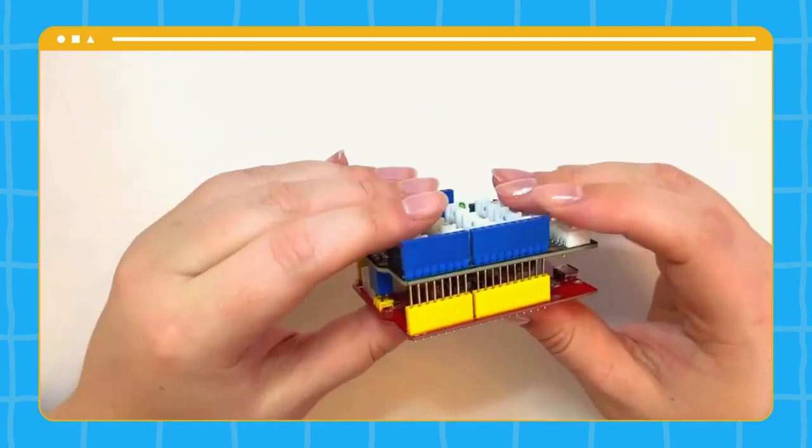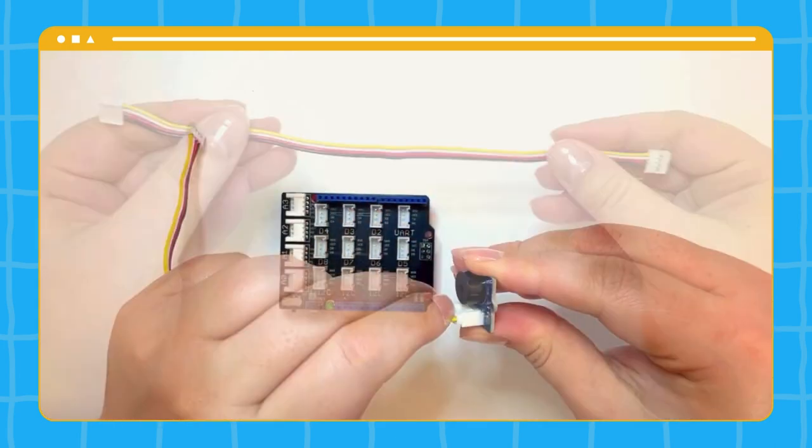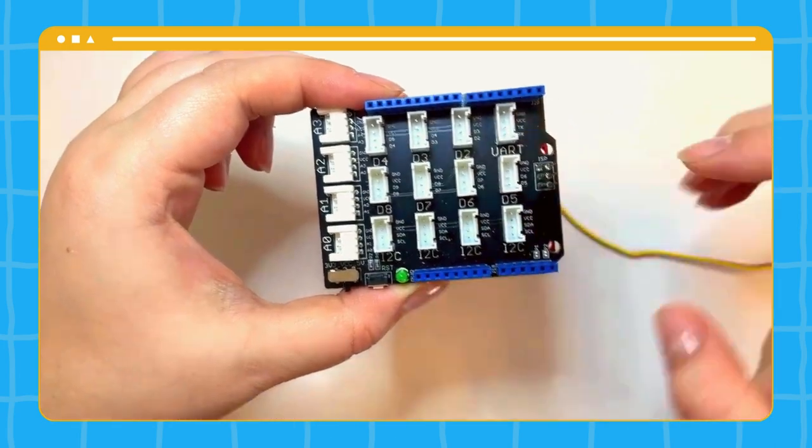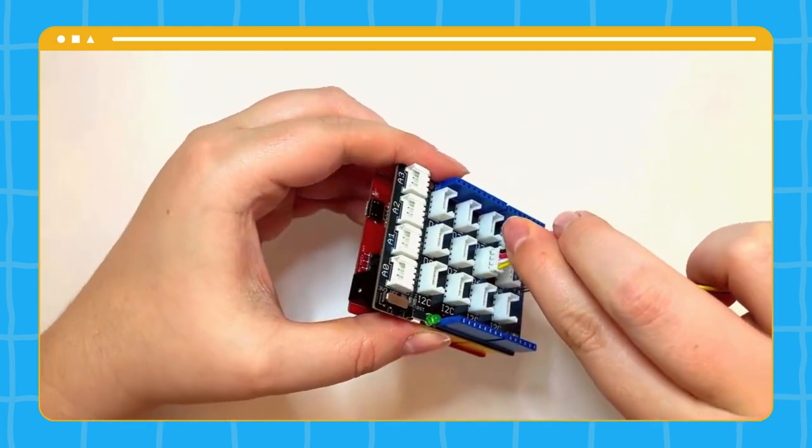connect components without the need for soldering. Take a cable, unwrap it, and connect it to the buzzer component. Then connect the other end of the cable to the digital D6 socket on the base shield. Finally, plug the USB cable into the Arduino and connect it to your device.